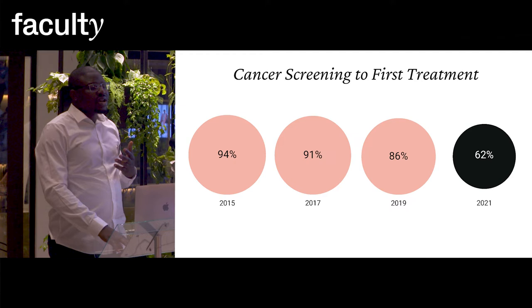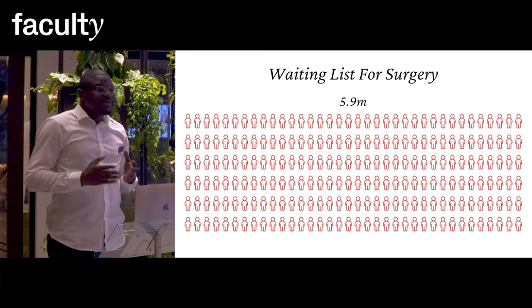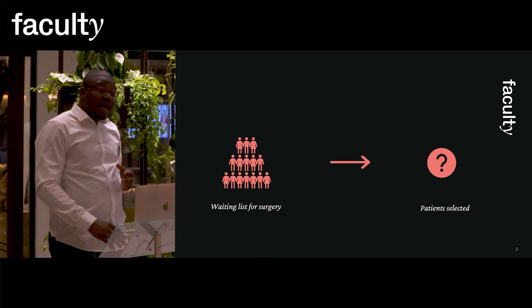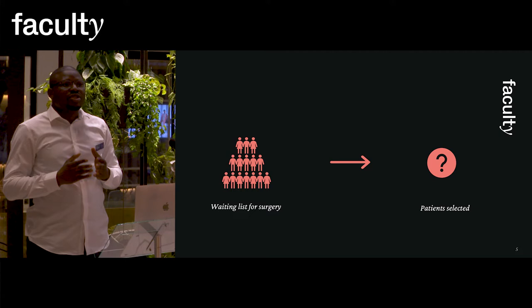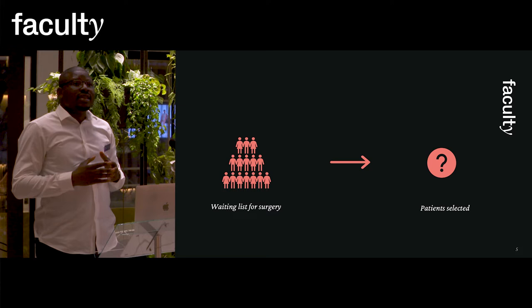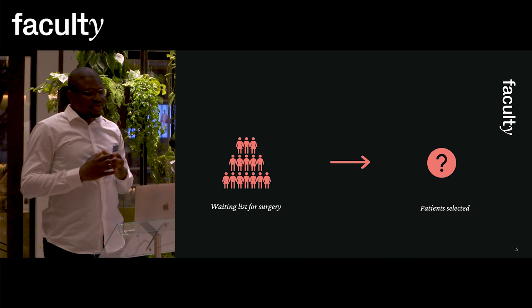As a result, there has been a backlog of patients. Currently, there are more than 5.9 million patients waiting for surgery. From this list, patients are selected for surgery based on the order in which they are added to the list. Can we estimate the risk of individual patients and prioritize those that are at most risk?